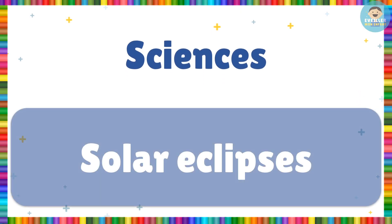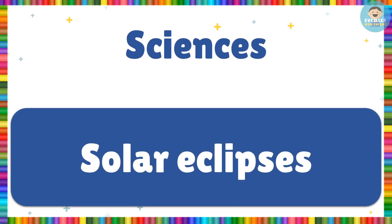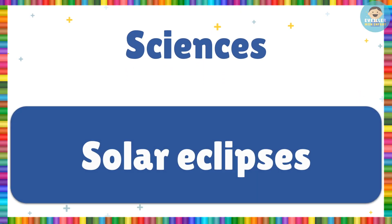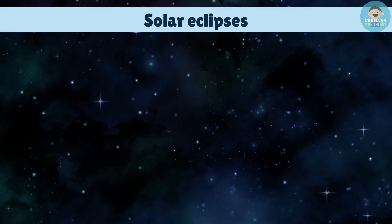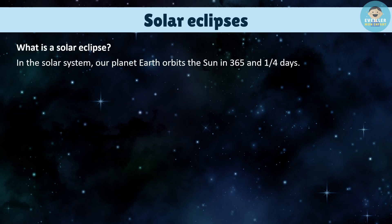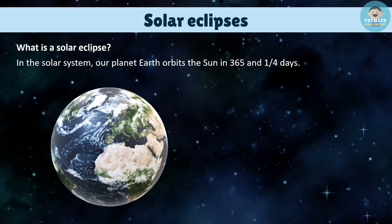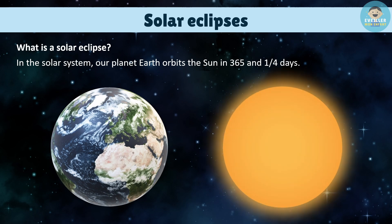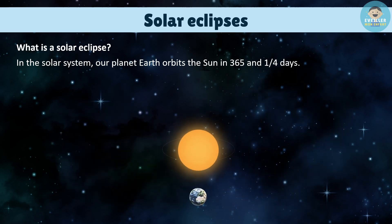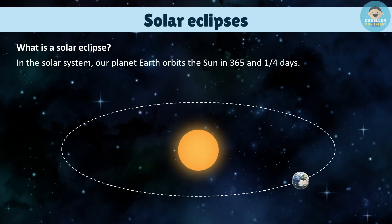Sciences. Solar Eclipses. What is a solar eclipse? In the solar system, our planet Earth orbits the Sun in 365 and a quarter days.